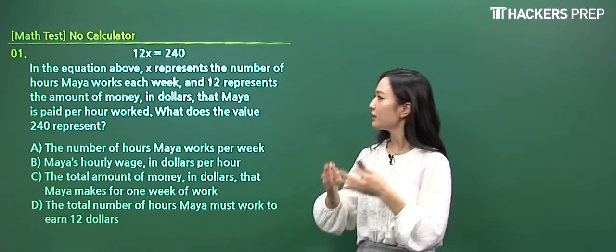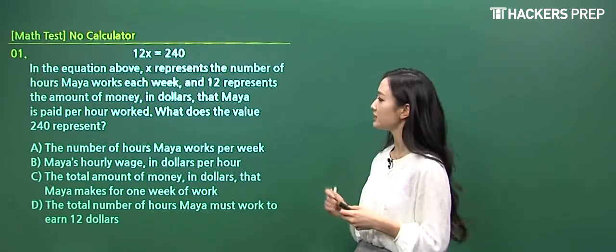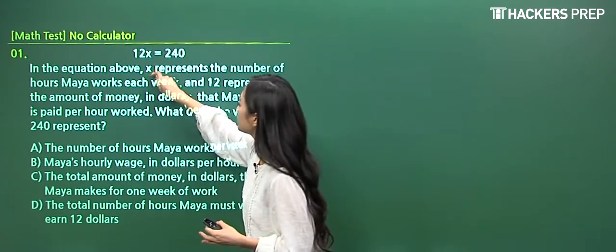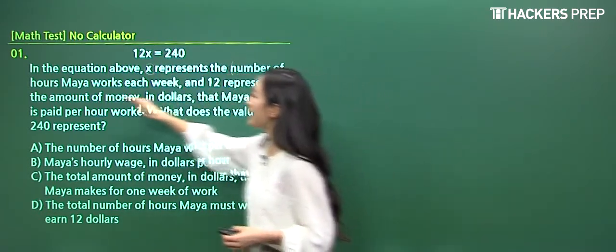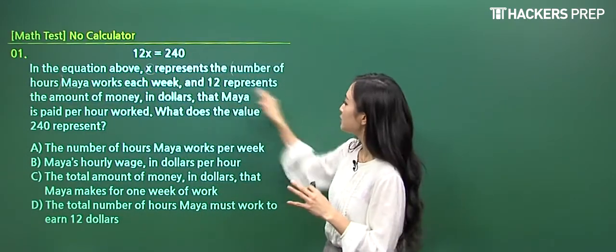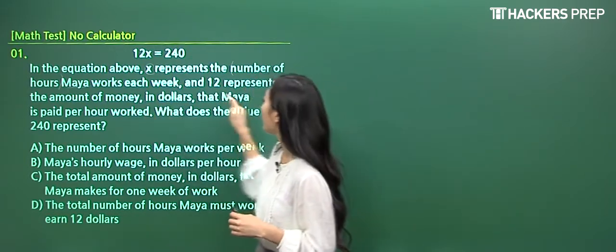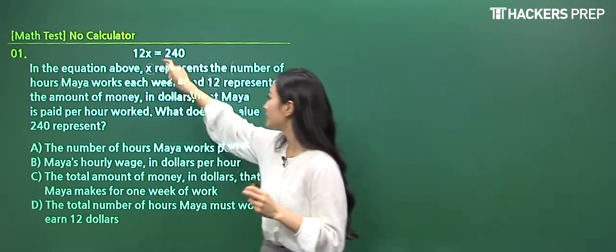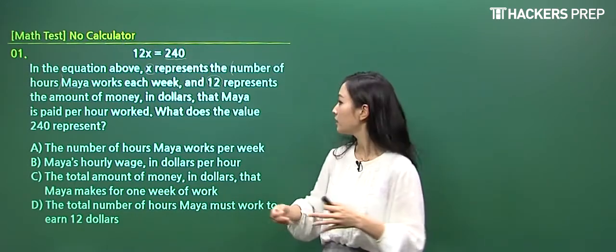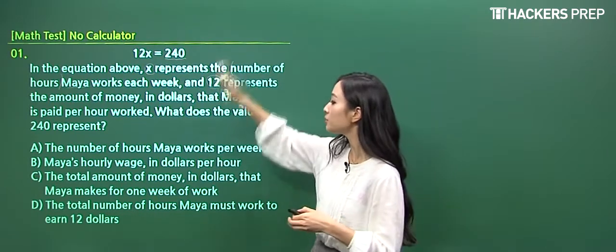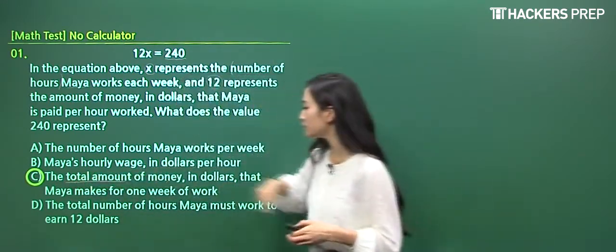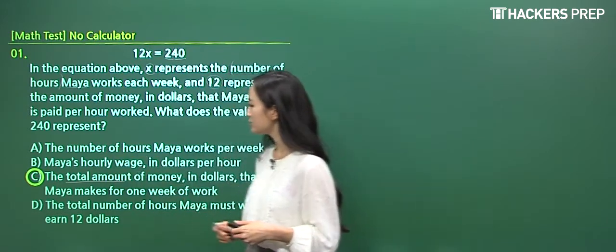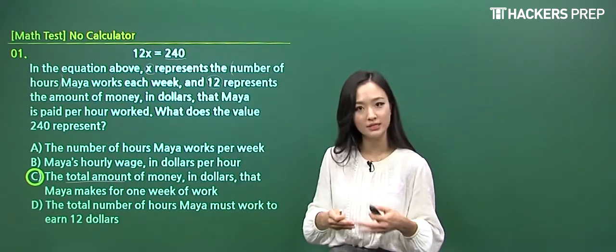So number one presents a basic equation and the setup given. Let's read it together and pinpoint what they're asking for and then we'll do these solutions together. So 12x is equal to 240 and they're telling us that x, this variable, represents the number of hours a person works each week, and 12 represents the amount of money that she is paid per hour. So the 12 is represented by the hourly rate which Maya is paid. And they're asking for the value of 240, how do we interpret this in a real life situation? The amount of money multiplying by the rate equal to the total amount. So you just have to look for the expression of total amount given in the answer choices.